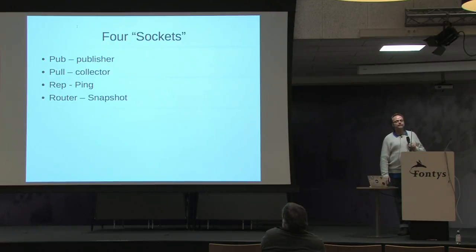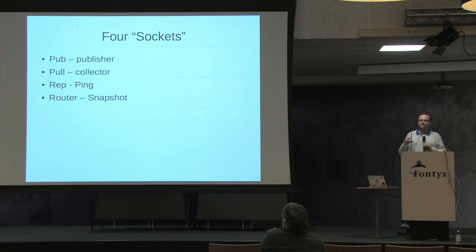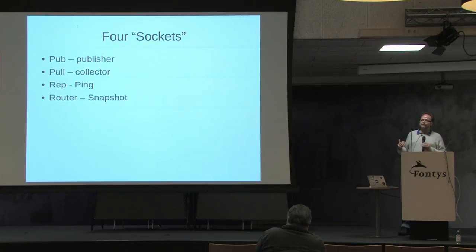There are four sockets on the server: a publisher, a collector, a ping socket that also lets you quit the server, and a router. Rather than a pure pub/sub model — which is the usual ZeroMQ model — a router allows a client to say "just respond to me" and get the entire state of the server up to that point. If you join the session, you can get the base file and all changes, then keep listening to the publisher for new changes, so you can start from scratch at any point.